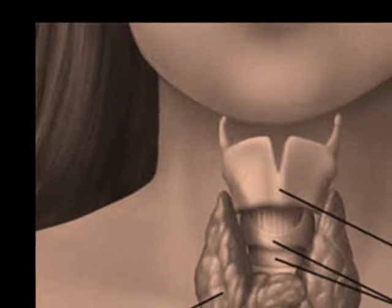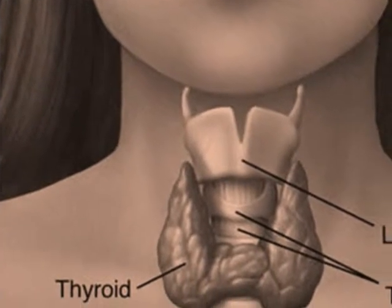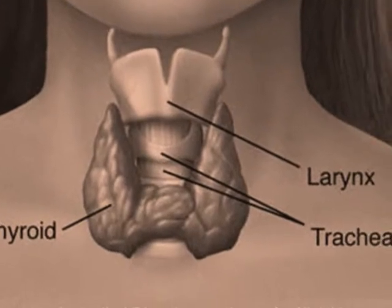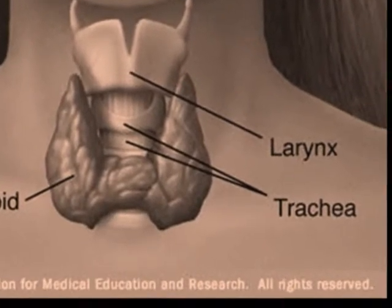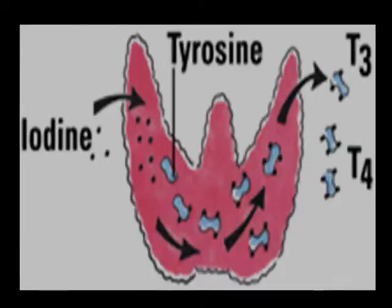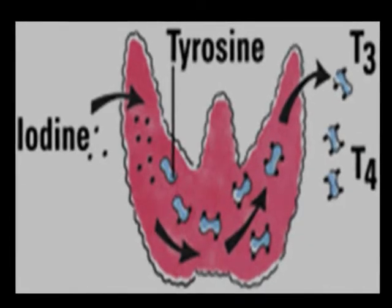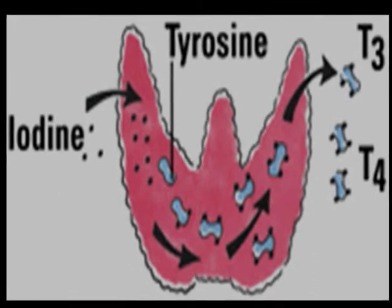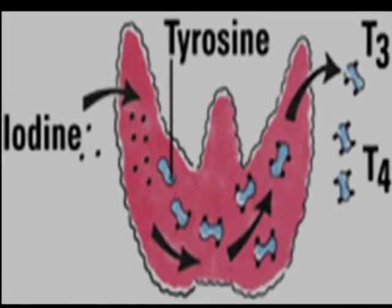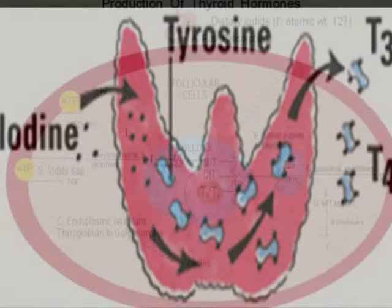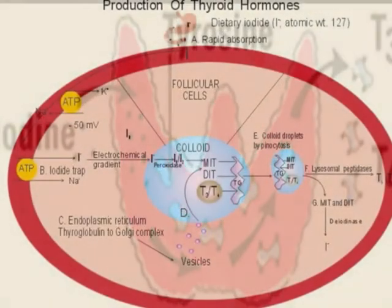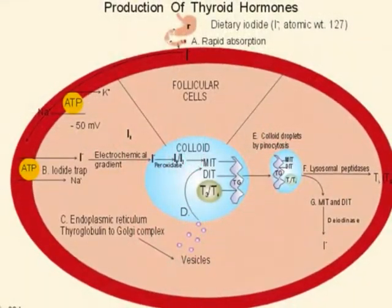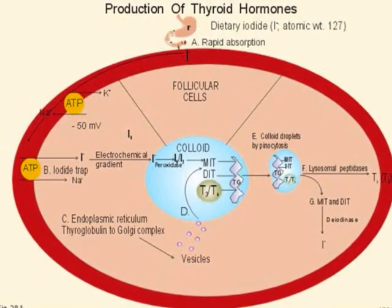In the thyroid, thyroglobulin and thyroid peroxidase are synthesized by follicular cells. Hydrogen peroxide is synthesized at the luminal membrane. Inorganic iodide is trapped from the circulation and transported to the follicular lumen, where it is oxidized by hydrogen peroxide. Iodine is then transferred into the tyrosine residues in the thyroglobulin by iodinase enzymes, forming monoiodothyrosine and diiodothyrosine.